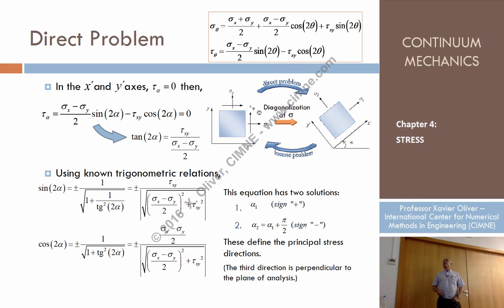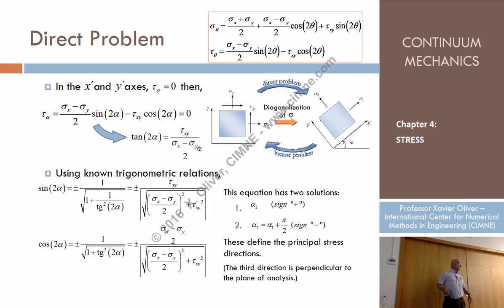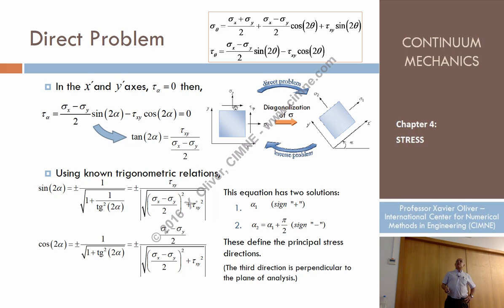Imagine that we know the stresses in the coordinate system. Never forget that there is a third axis which is normal to the plane of analysis and possibly a third normal stress in that plane, with no tangential stress. So we know sigma x, tau xy, sigma y — like that — tau xy. And by the way, that off-diagonal term would be tau yx, but by symmetry it equals tau xy.